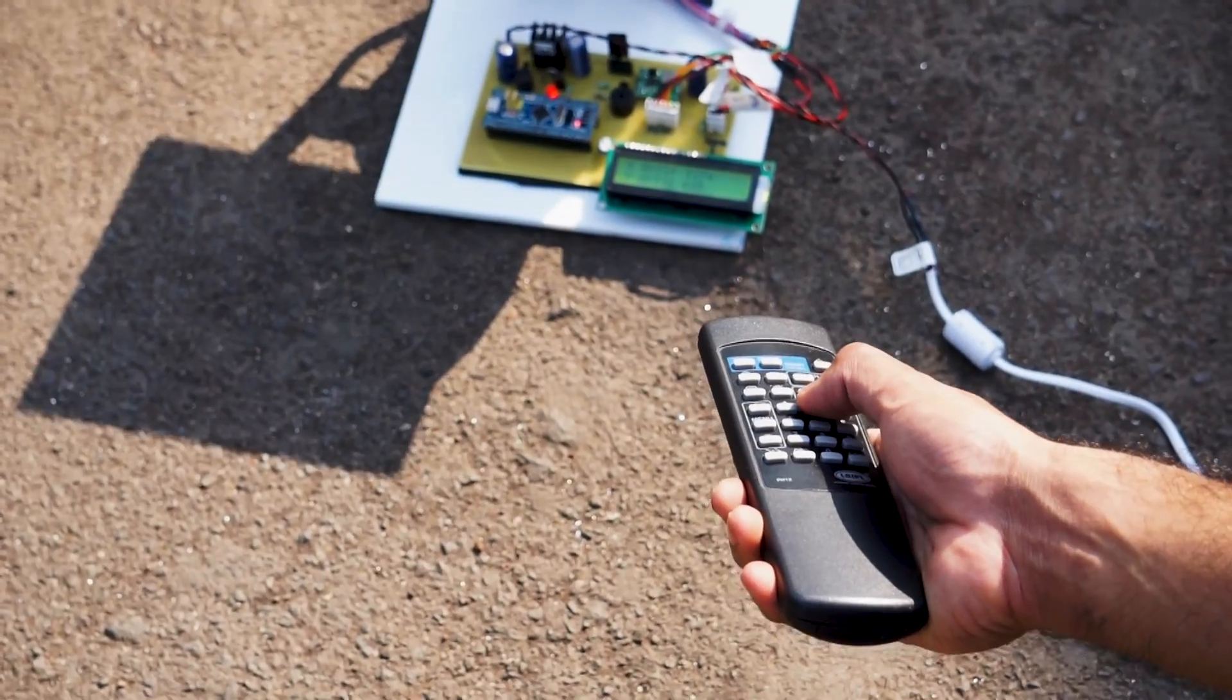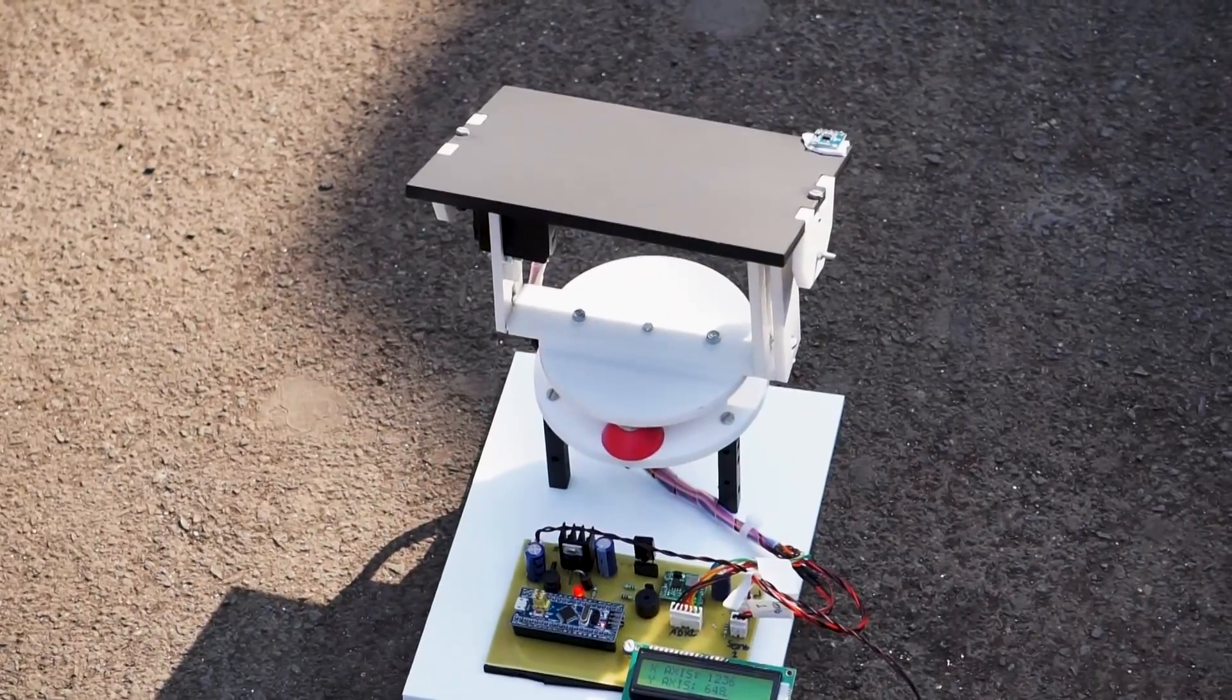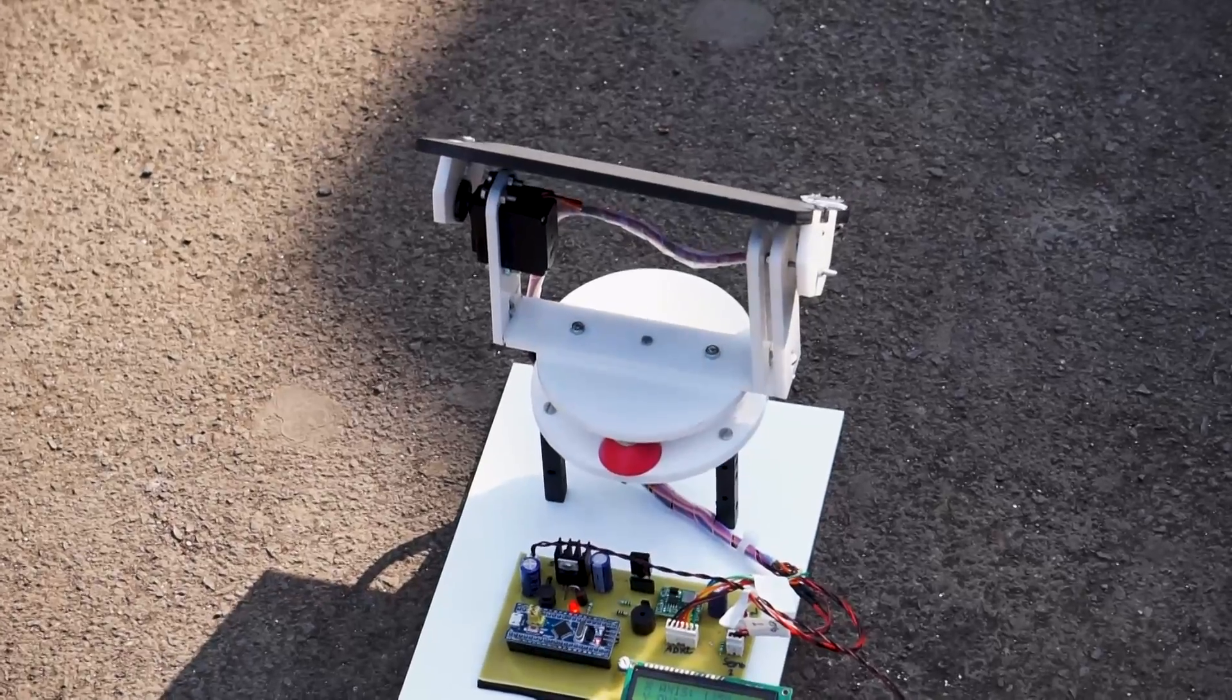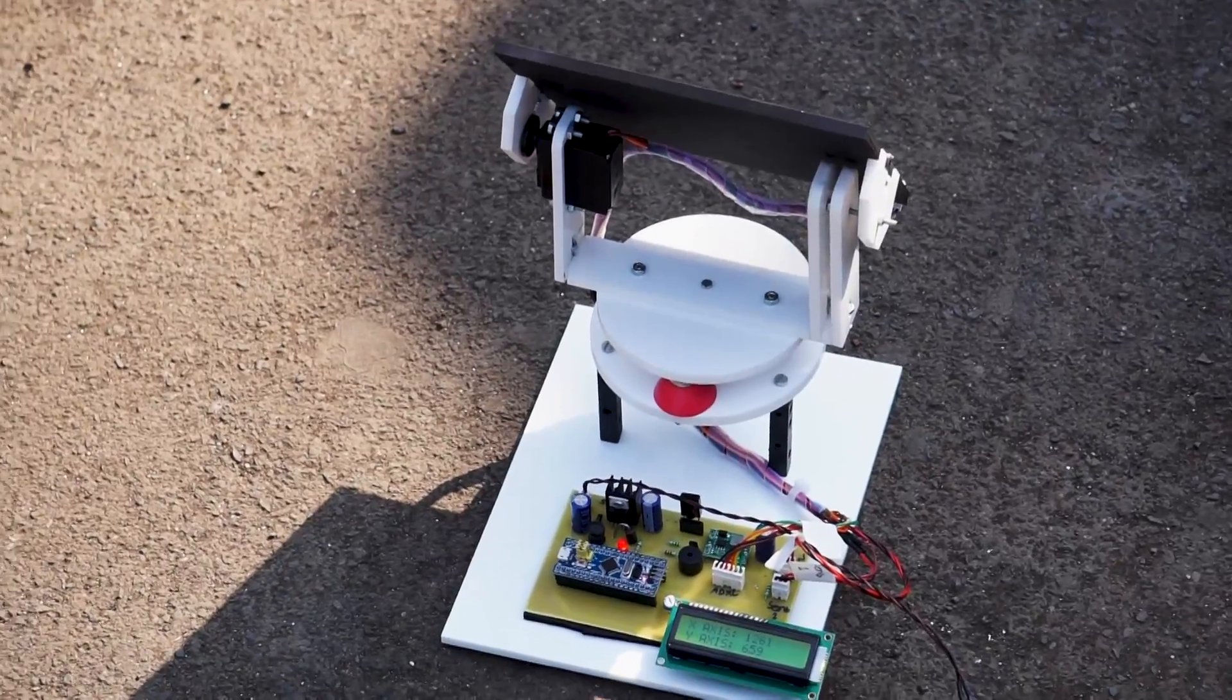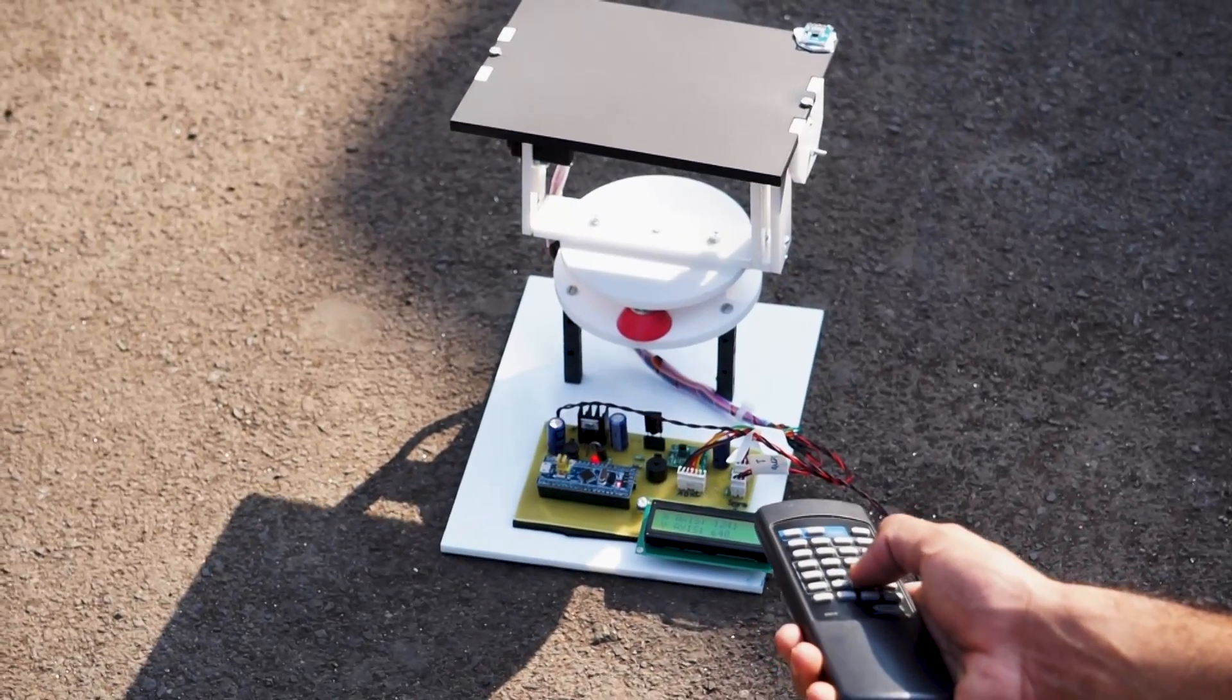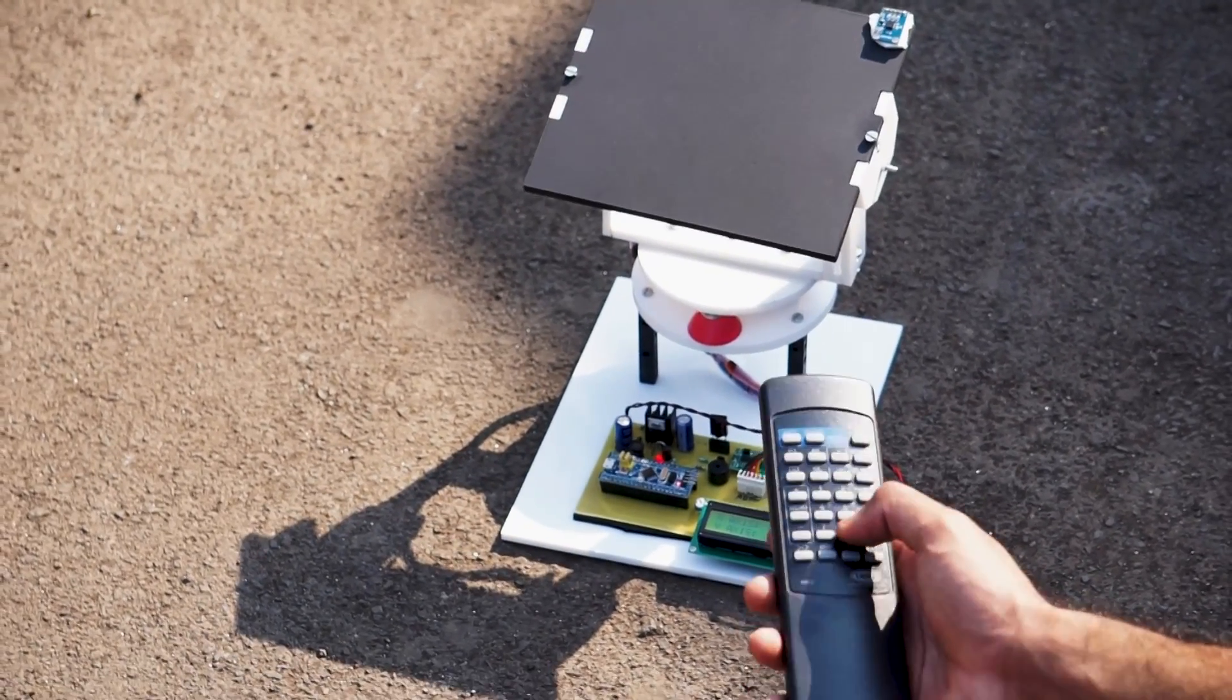The system allows the user to change the antenna angle using up and down buttons from the remote control. When the user presses the up and down button, the IR receiver receives these commands and uses a servo motor to change the antenna angle as desired by the user.